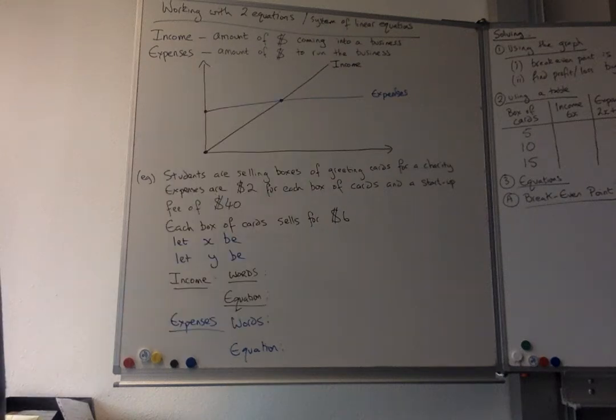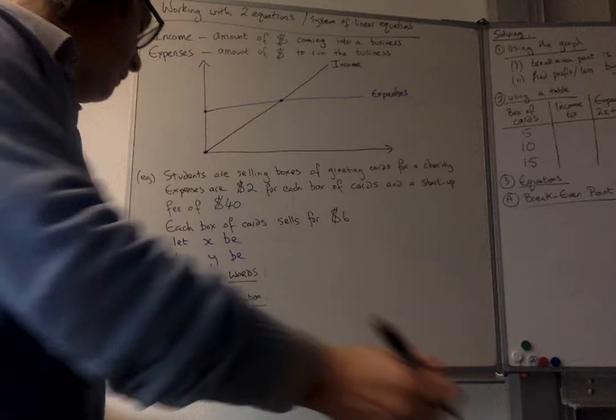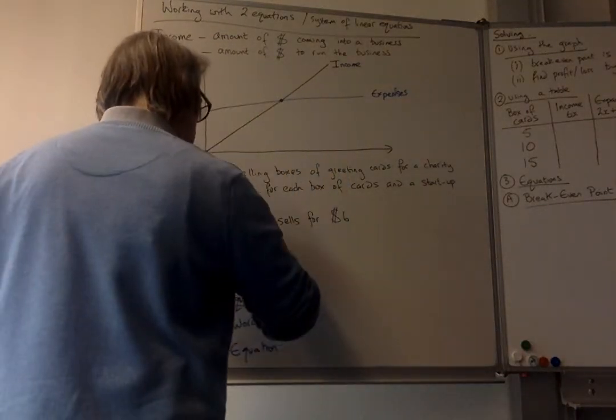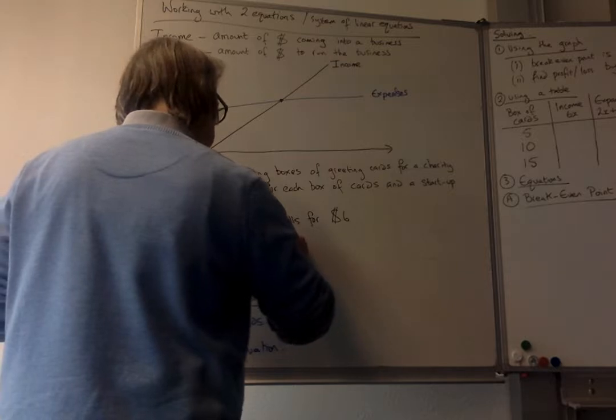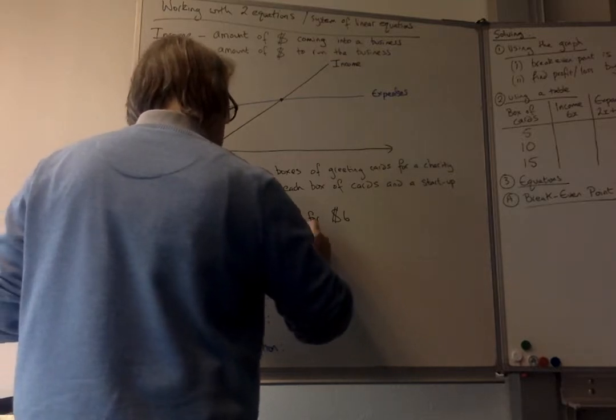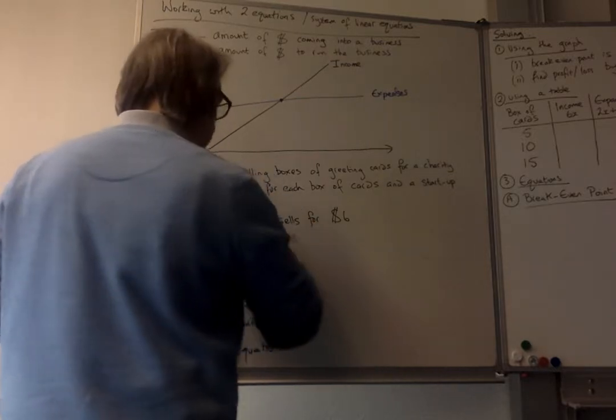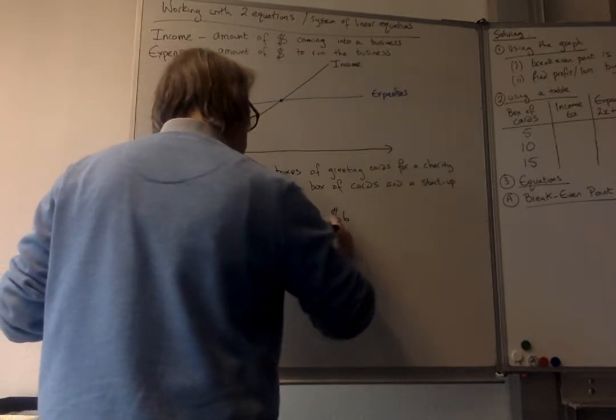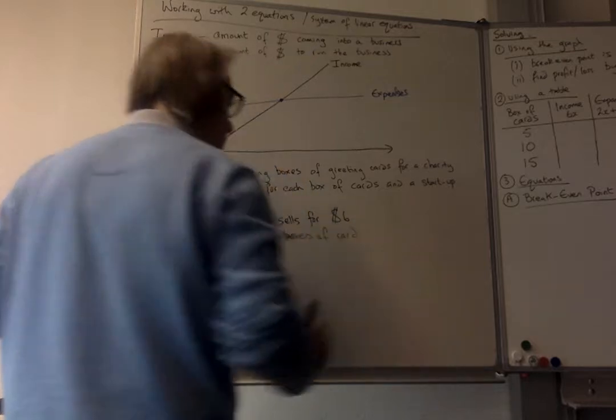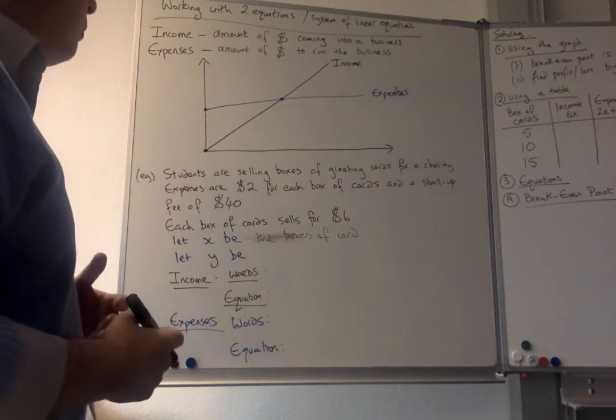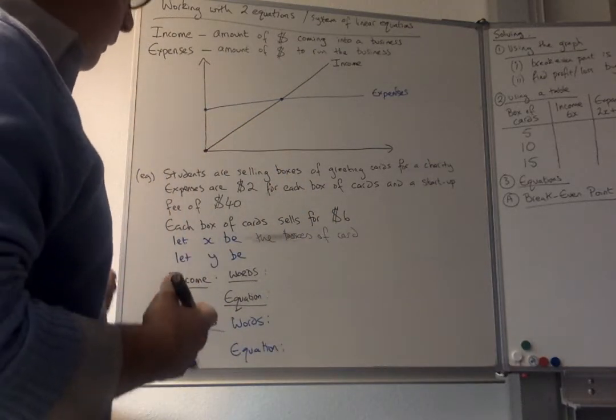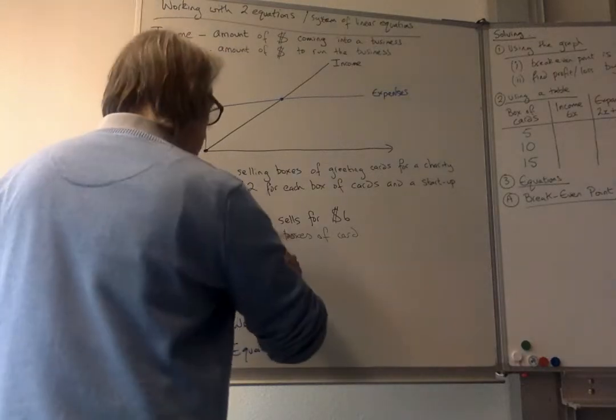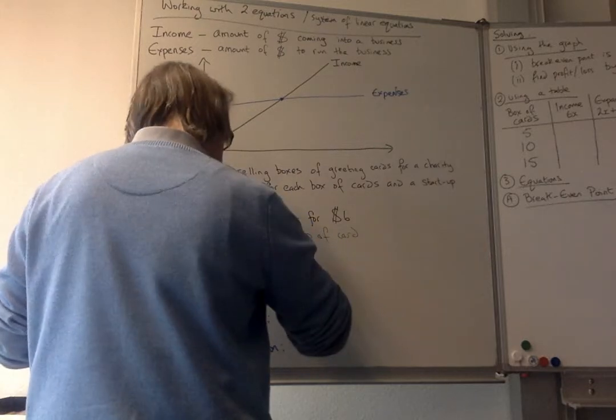So here you are back again. Well, the X is going to be the number of boxes of cards. So you've got one box, two box, three box, four box, and depending on how many boxes you sell, then that is how much money you make.